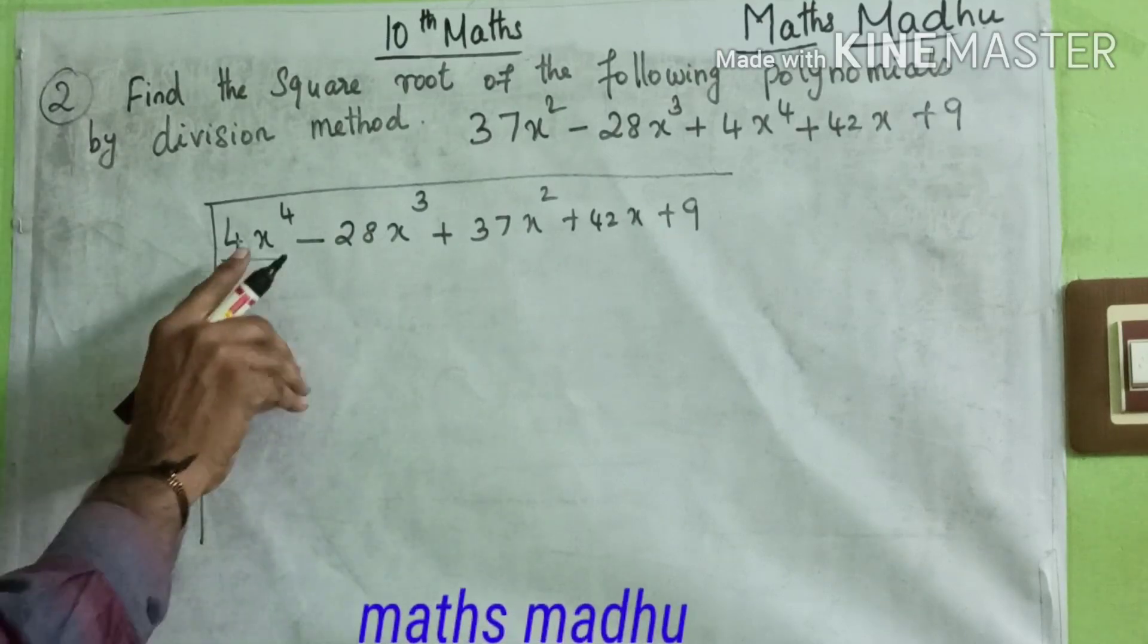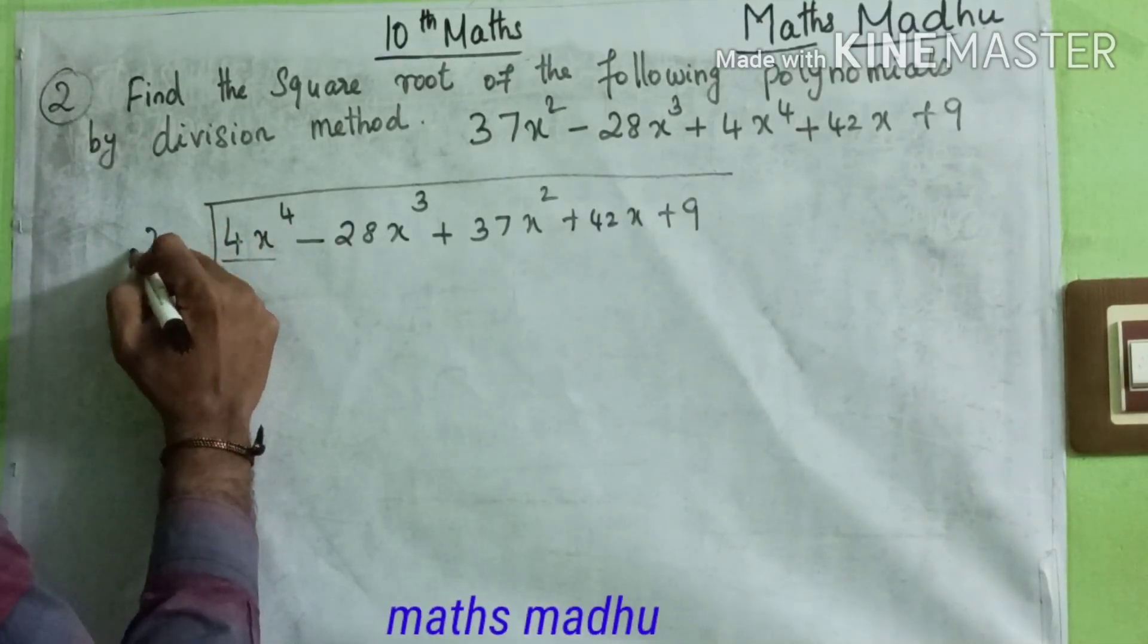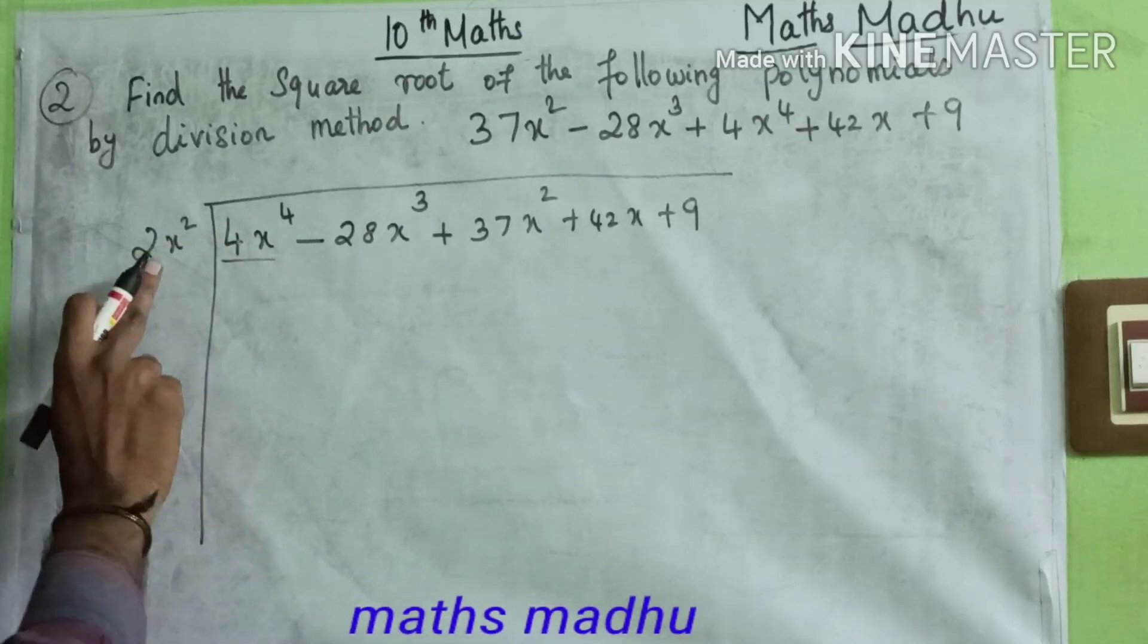So x⁴ variable, in another number you take half value. x⁴ to x², 2x². So the number...